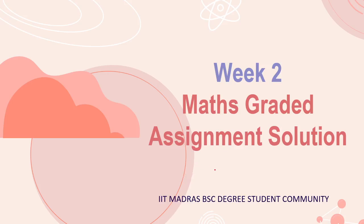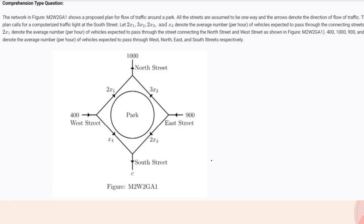Hi everyone, welcome again. This is the third part of Maths Week 2, Term 2 graded assignment solution video. We have to deal with a comprehension type question about a proposed plan for flow of traffic around a park, where all streets are assumed to be one-way. The arrows represent the direction of flow of traffic.